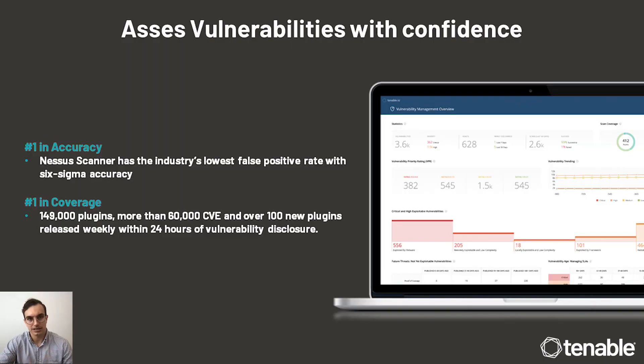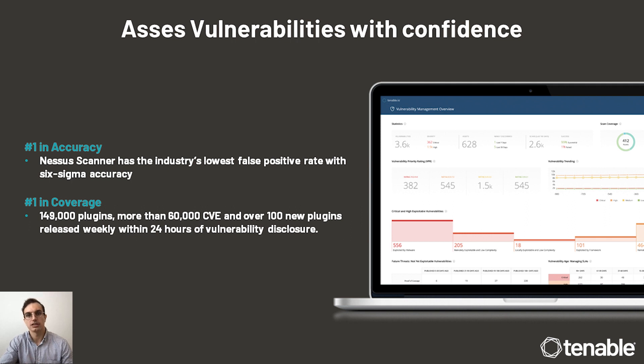The Nessus scanner was the world's first vulnerability scanner. It was created in 1998, so the technology has been refined over 23 years. It still remains at the core of all of our vulnerability management products, and the Nessus scanner itself has the lowest false positive rate with six sigma accuracy — which translates to only 0.32 defects in every 1 million scans. When you couple that with the broadest coverage of CVEs, you can have confidence that you're scanning accurately and across the full spectrum of disclosed CVEs.